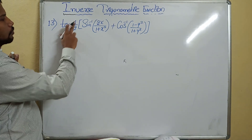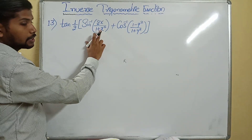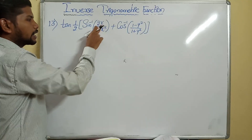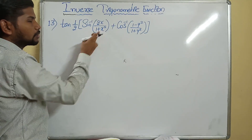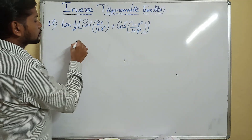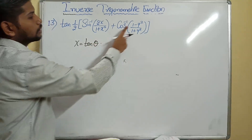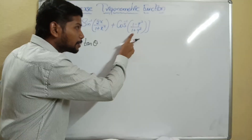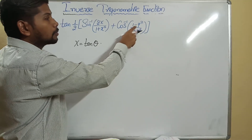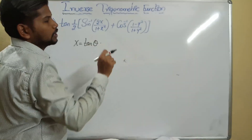Here it is tan of (1/2 × sin inverse of 2x / (1 + x²)). Whenever 2 tan θ divided by 1 + tan²θ appears, that is sin 2θ, so x must be substituted as tan θ. Also, 1 minus tan²θ divided by 1 plus tan²θ is the formula for cos 2θ.